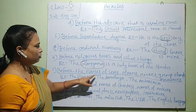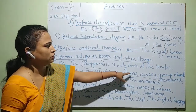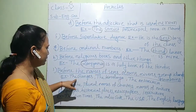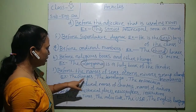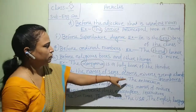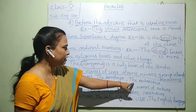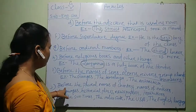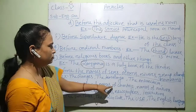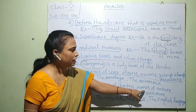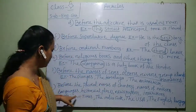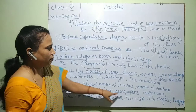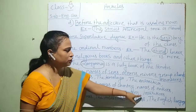We use 'the' before the names of seas, oceans, rivers, groups of islands, and mountains — for example, the Ganges, the Himalayas, the Antarctica. We also use 'the' before the plural names of nations, languages, historical places, newspapers, and institutions.